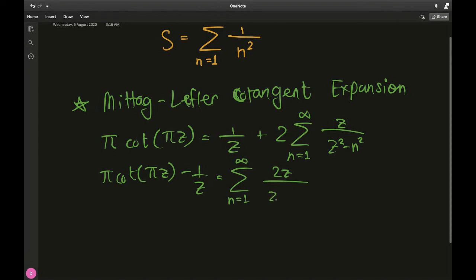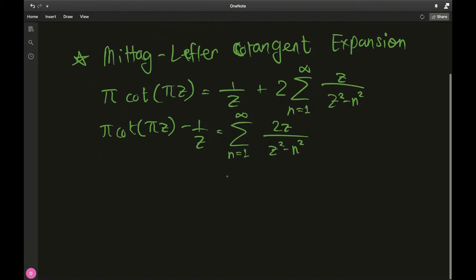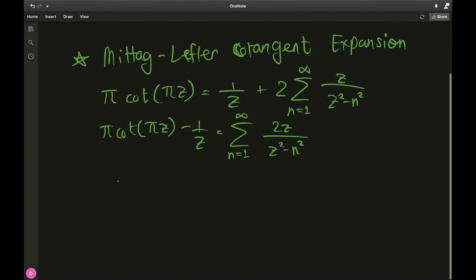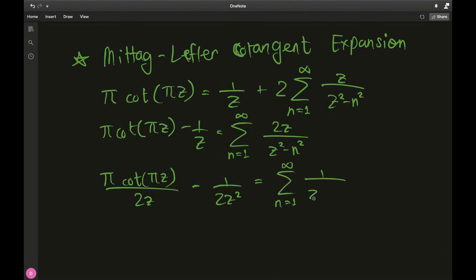So what I am going to do is I am going to take the 2z on that side, so we have π times cotangent of πz over 2z minus 1 over 2z squared being equal to sum from n equals 1 to infinity of 1 over z squared minus n squared.